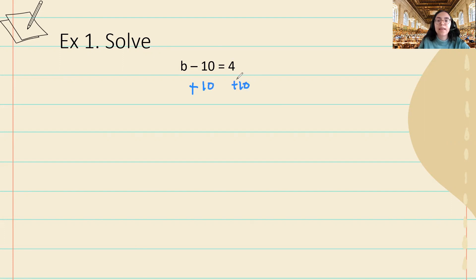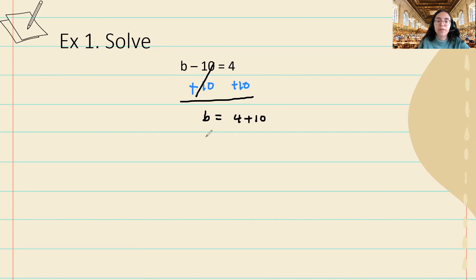Then I can cancel these, because negative 10 plus 10 will give me zero, so they cancel. I can bring down my variable b, bring down my equal sign, and perform the operation on the right-hand side. This gives me 14, and that is my value for b.